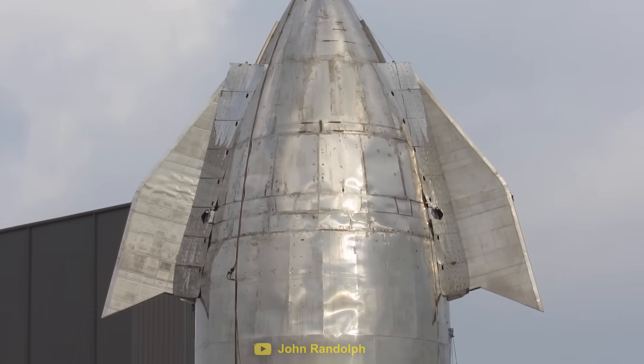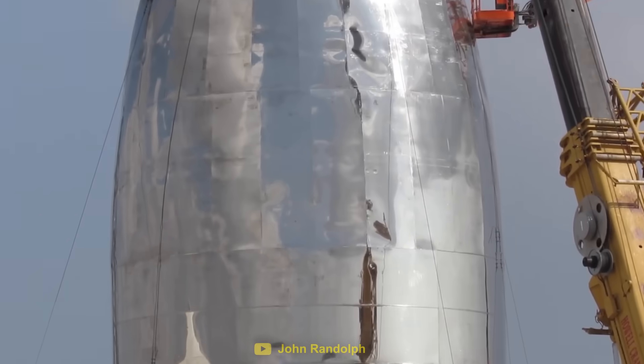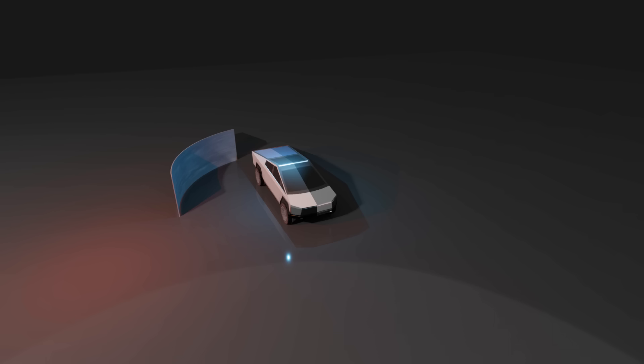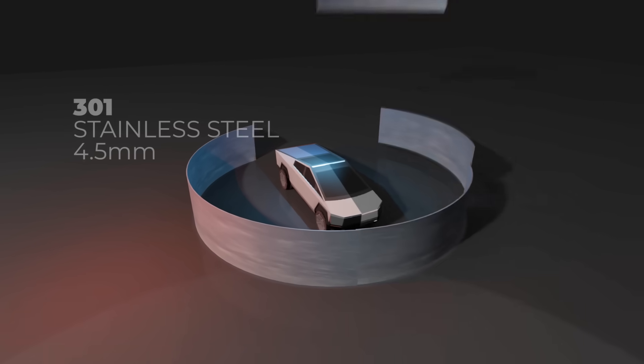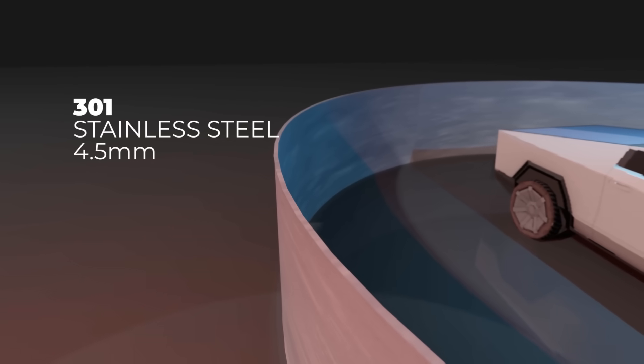But for some reason, it wasn't so shiny. One of the biggest challenges with the initial Starship prototypes was the welding. Initially, each ring had to be made out of several sheets of 301 stainless steel, which were 4.5 millimeters thick.